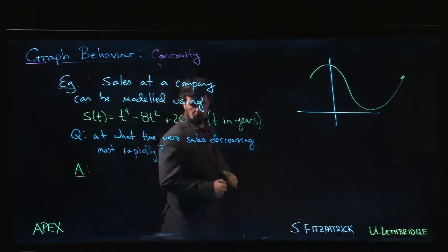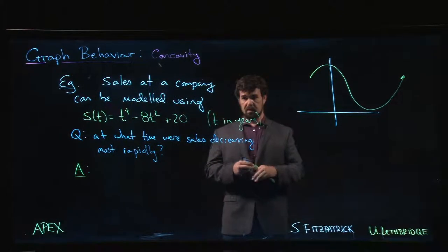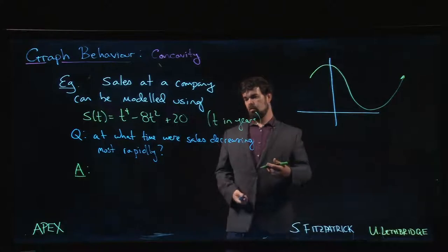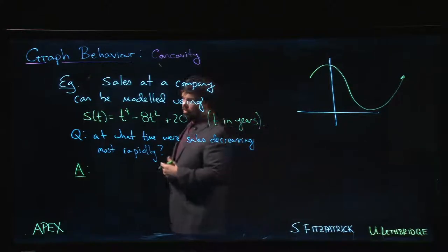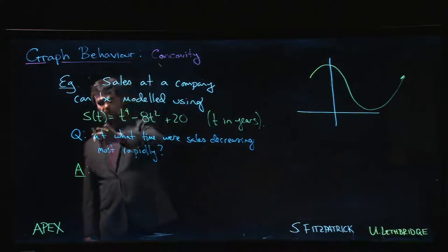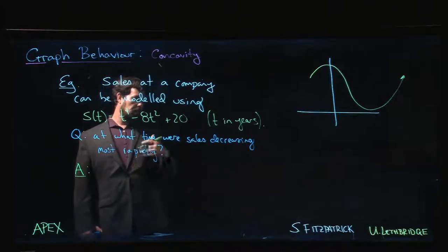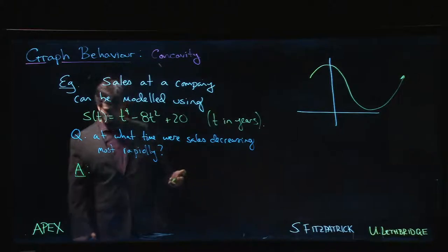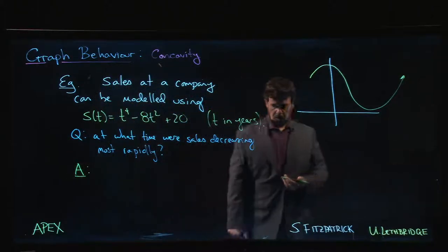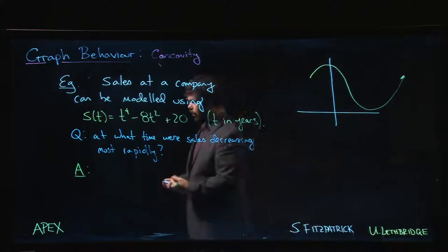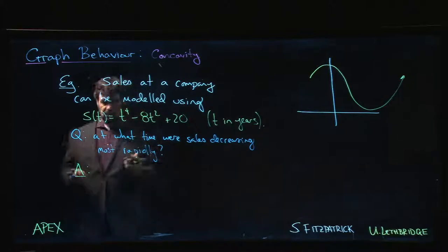We want to find the time when the rate of decrease was the maximum. That means we're looking for when the derivative was most negative. If sales are decreasing, the first derivative is negative, so most negative means a minimum. We want to find a minimum for the first derivative. A minimum for the first derivative should occur at a zero for the second derivative, at a critical point. A zero for the second derivative is also an inflection point.